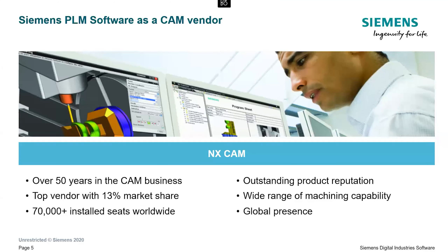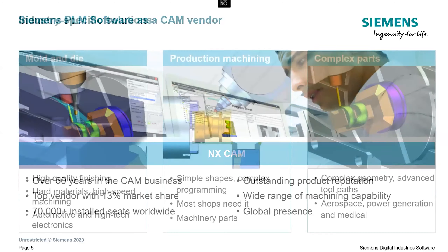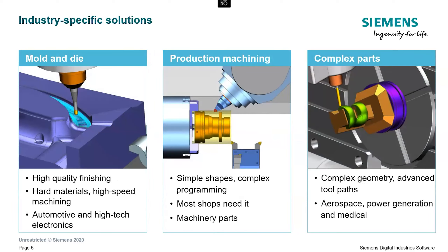NX CAM is well established in the industry. We have many customers across nearly all industries worldwide, varying from small machine shops with one or two machines to the largest international companies in automotive, aerospace, and machinery. We are also closely aligned with Siemens' motion control business unit, associated with the Siemens SINUMERIK controllers. NX CAM has been adopted across many industries in mold and die, production machining, and complex parts use cases typically associated with aerospace, power generation, and medical devices.